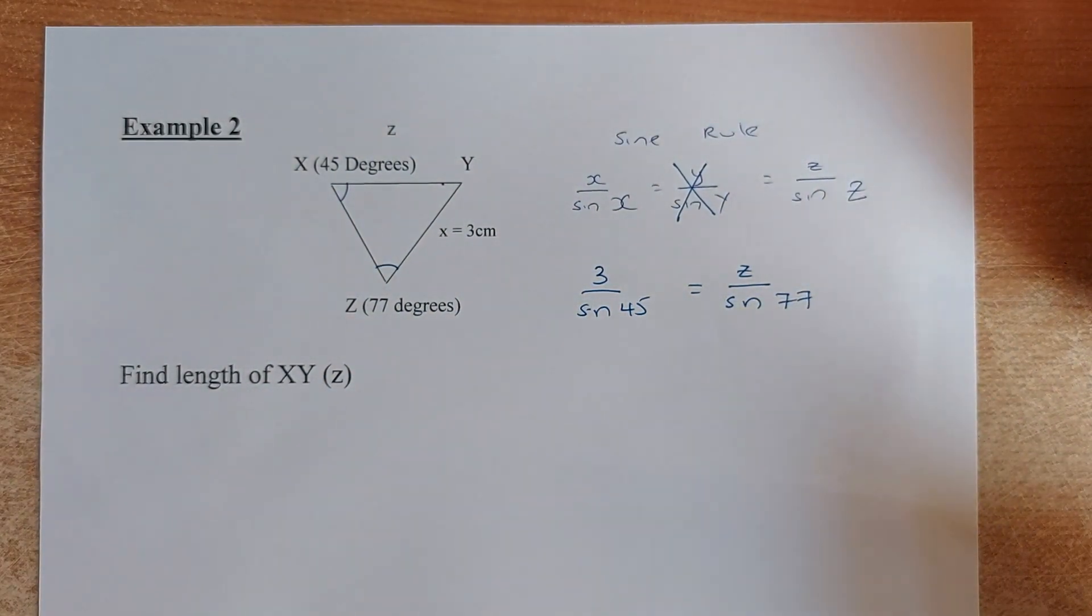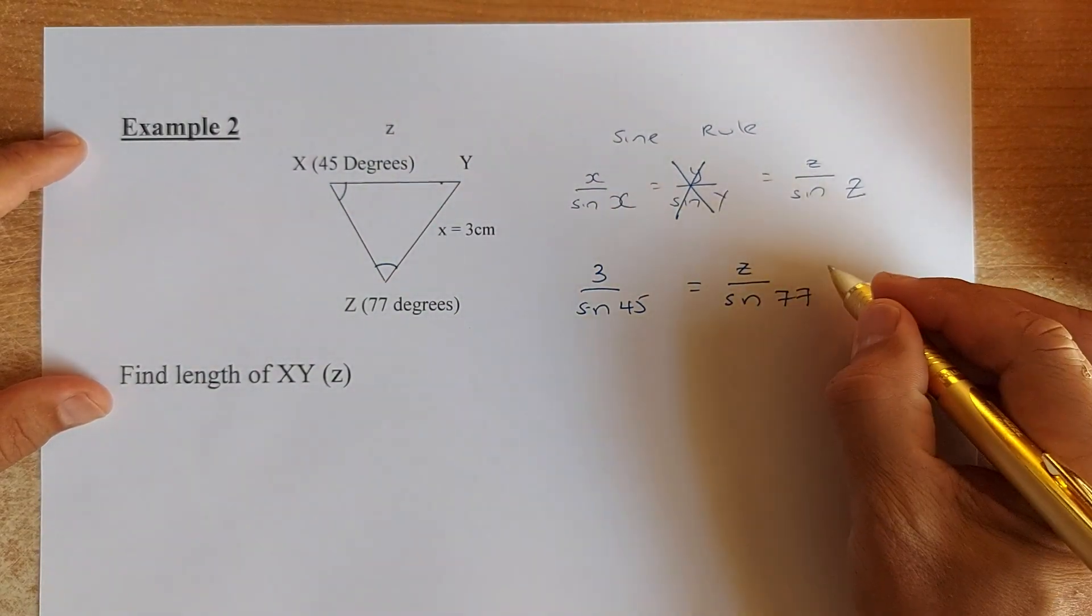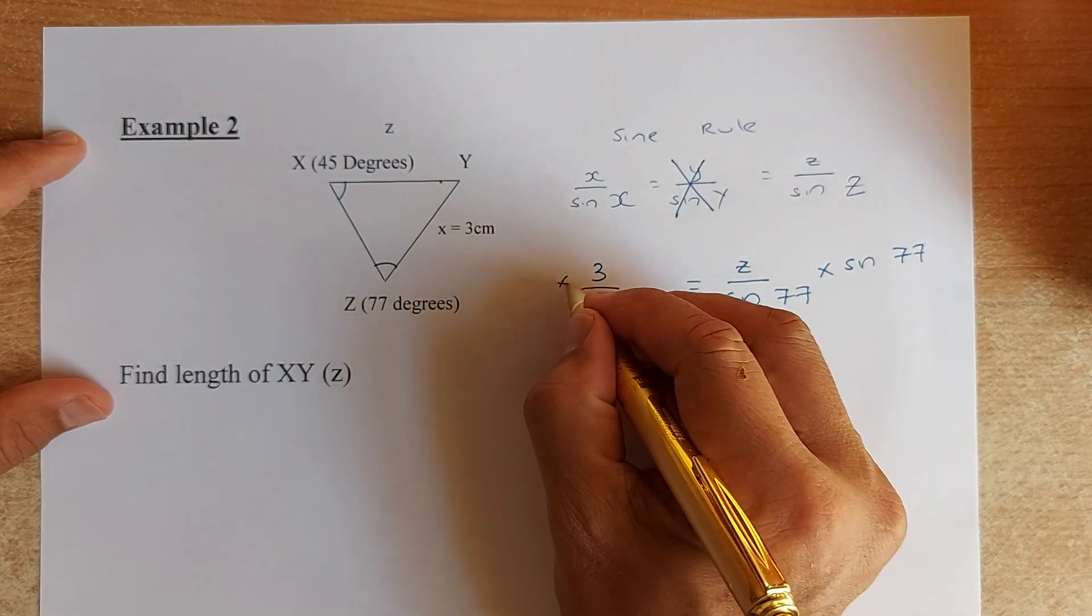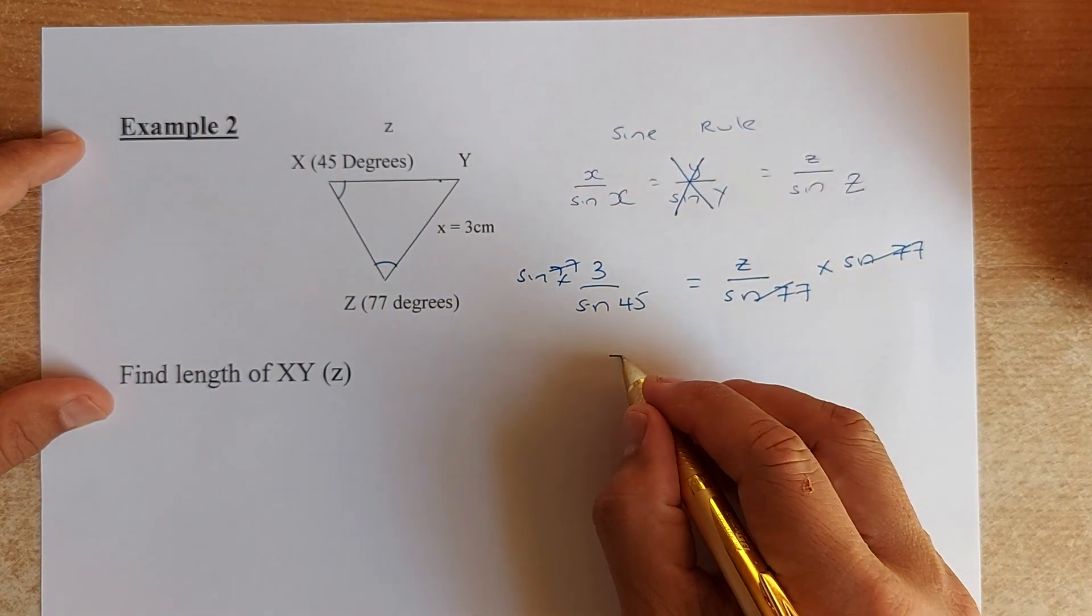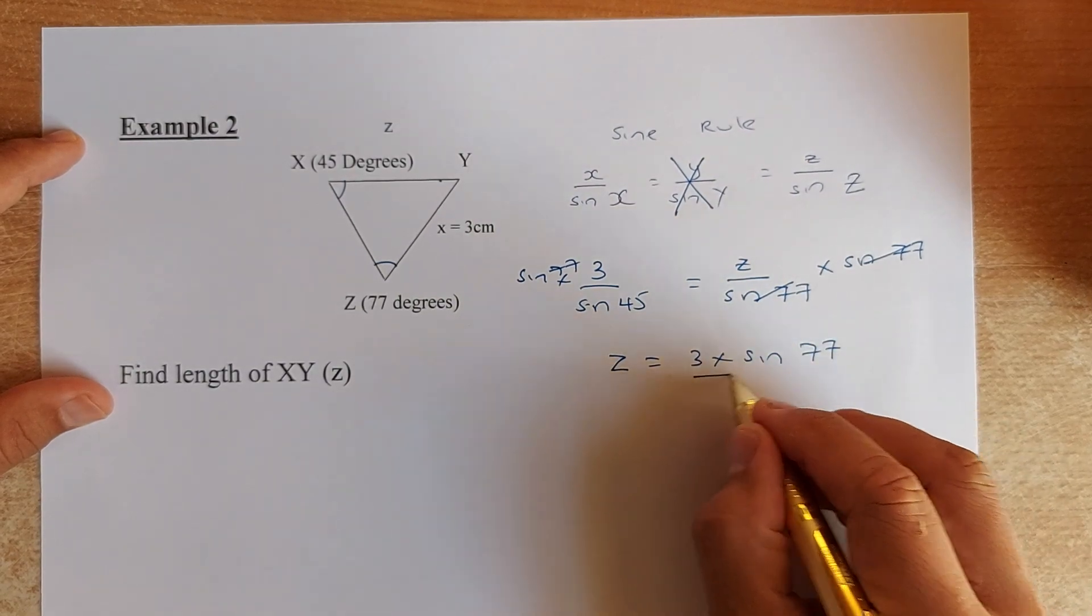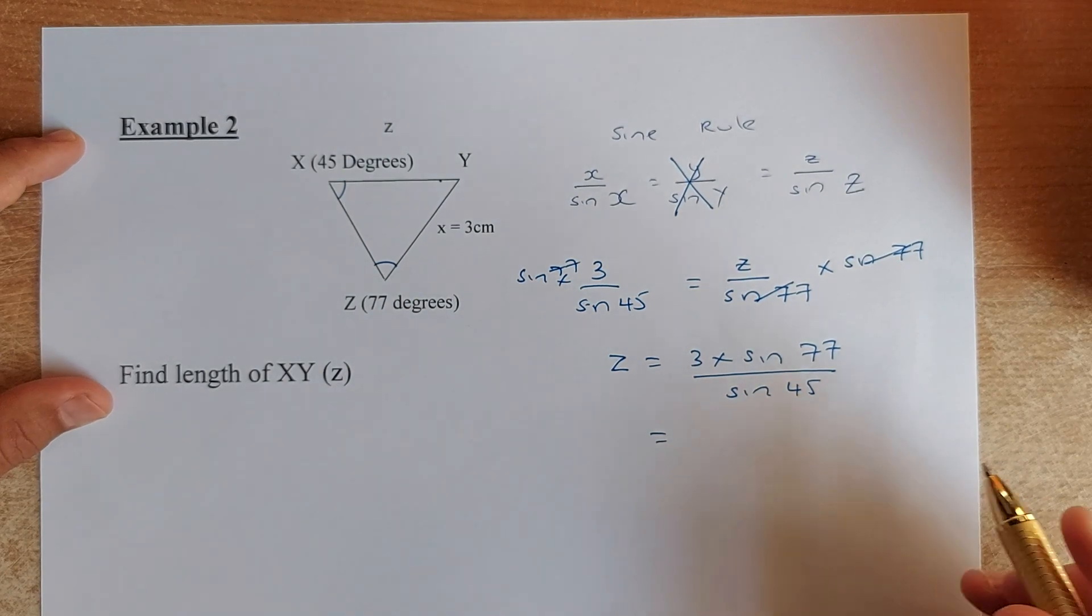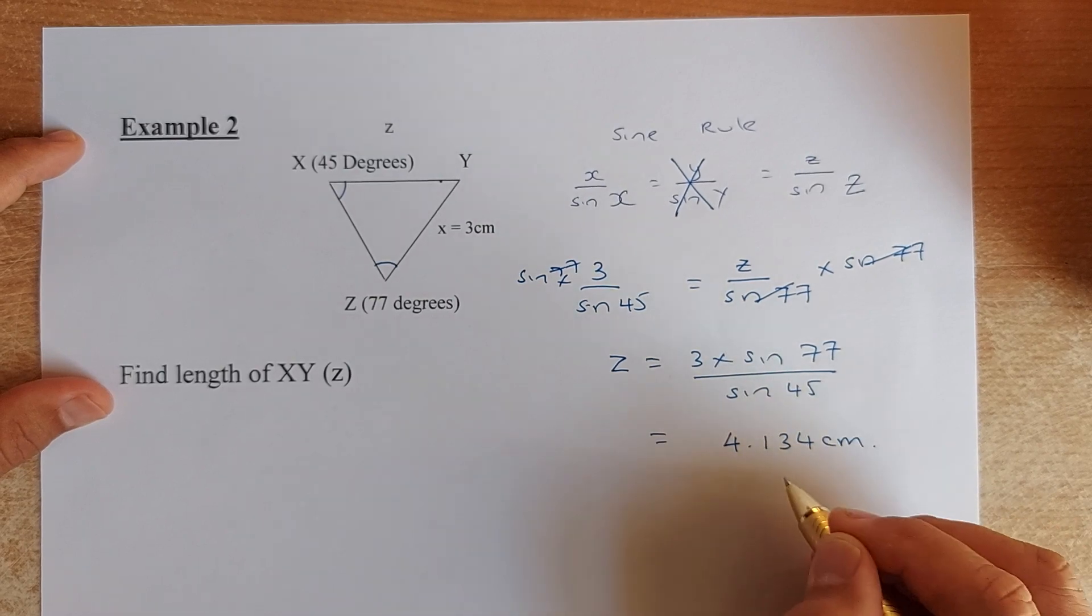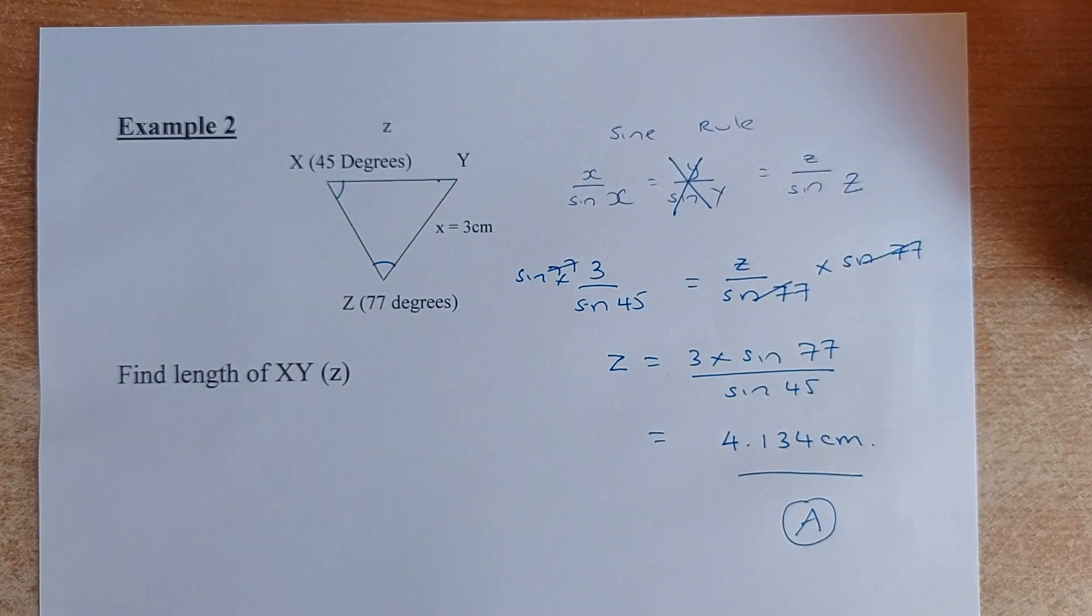So far, so good. Great. Now, the next step, we need to get rid of sin(77) because we are finding Z. What we do, we multiply sin(77) on both sides. And this will cancel out. So, we are left with z is equal to 3 times sin(77) divided by sin(45). And of course, the last step, you put in your calculator. I found it before. It is going to be 4.134 cm. That will give you an achievement for finding the sides using the sine rule.